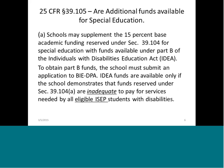In 25 CFR 39-105, are additional funds available for special ed? Schools may supplement the 15% base academic funds reserved under section 39-104 with funds available under Part B of the Individuals with Disabilities Act, IDEA. To obtain Part B funds, schools must submit an application to the BIE DPA office. IDEA funds are available only if the school demonstrates that funds reserved under section 39-104 are inadequate to pay for services needed by eligible ISEP students with disabilities.